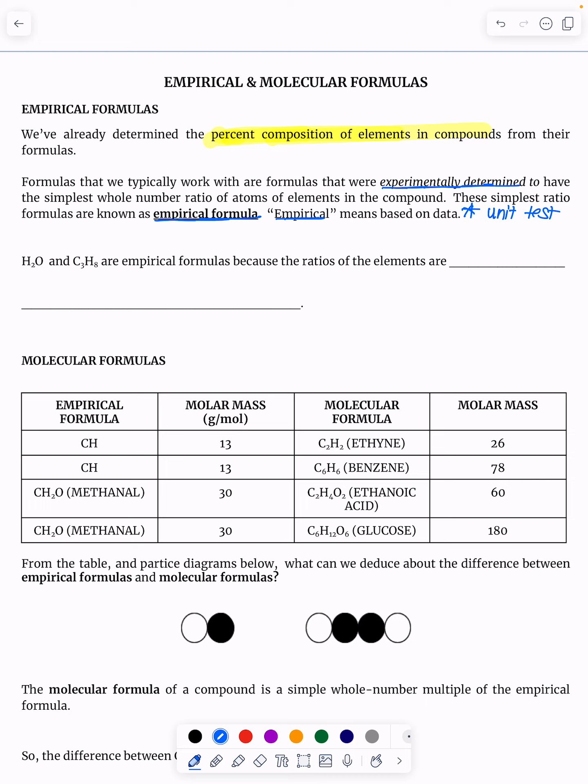So H2O and C3H8 are empirical formulas because the ratio of the elements are in their simplest form cannot be divided further. So let me just do H2O. So for example, H2O, we got 2H to 1O. I cannot divide that any further.